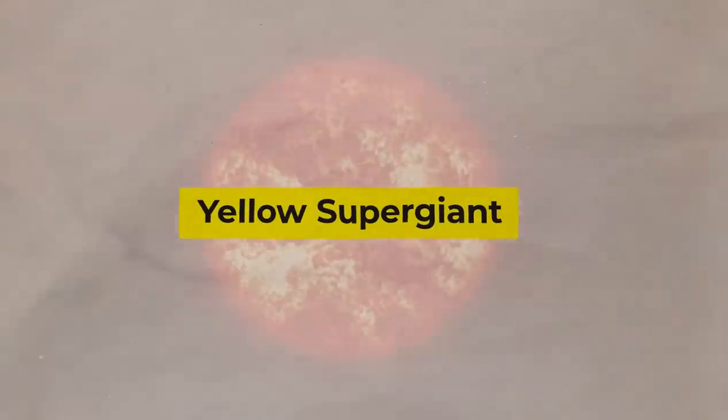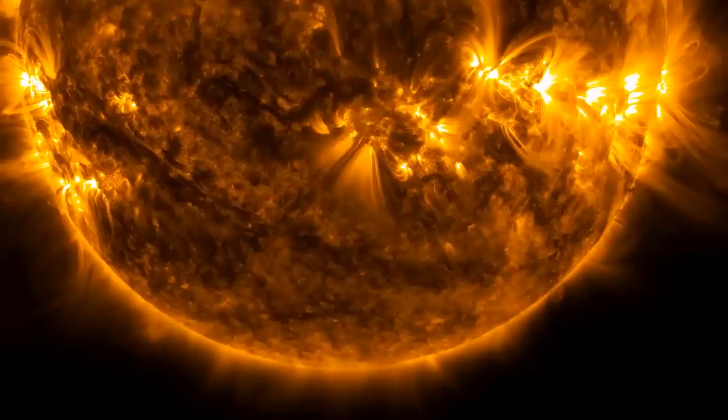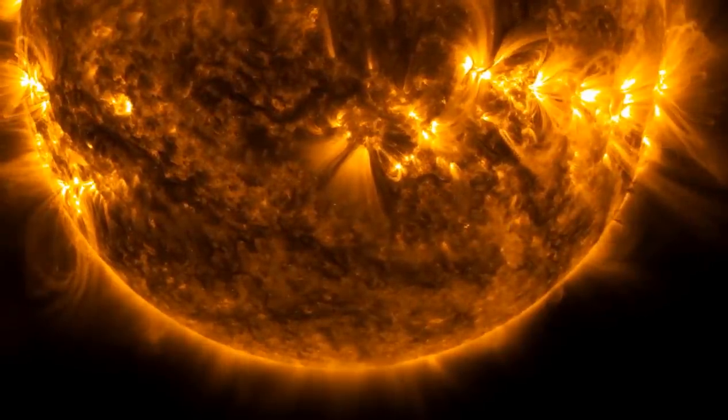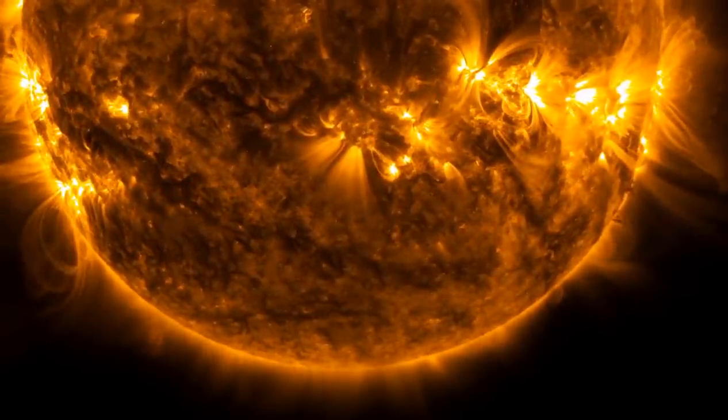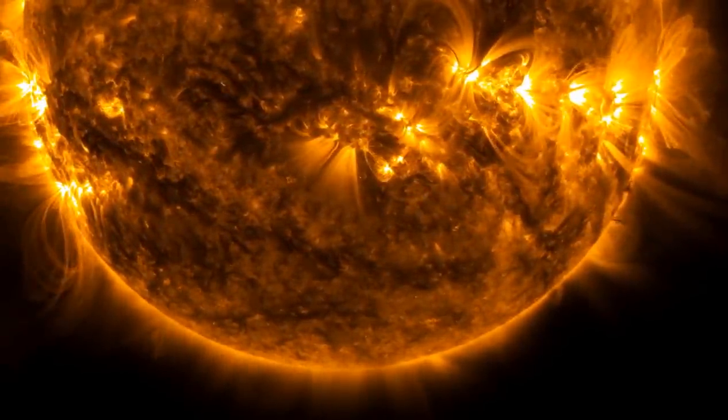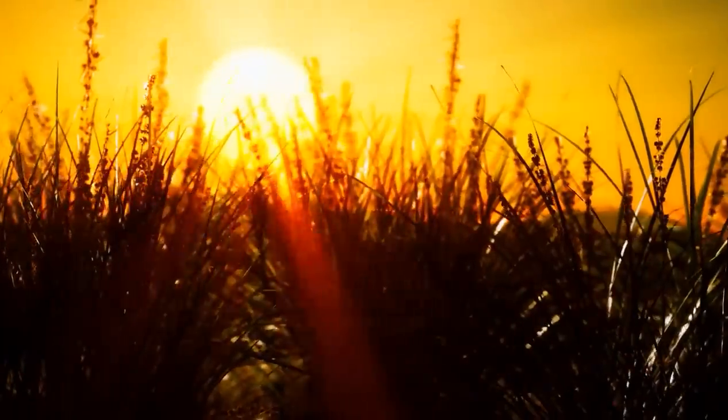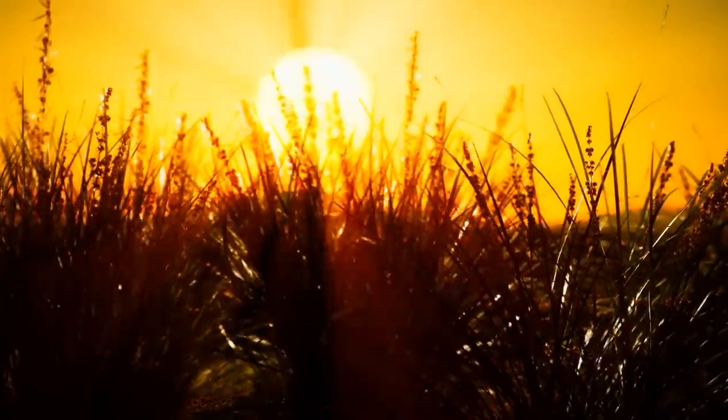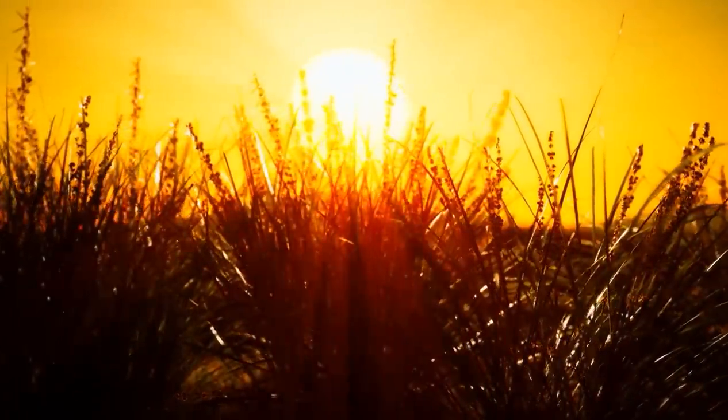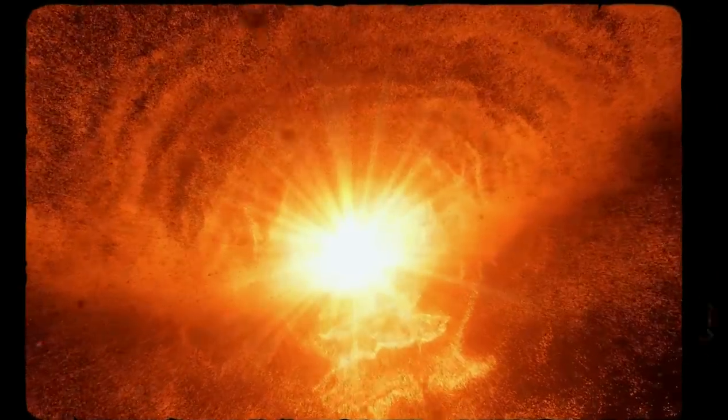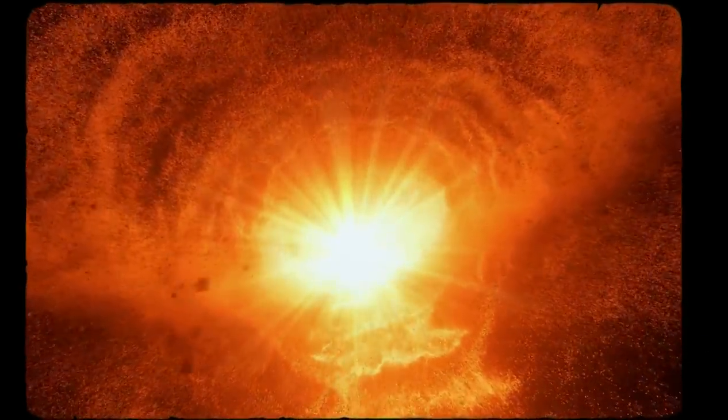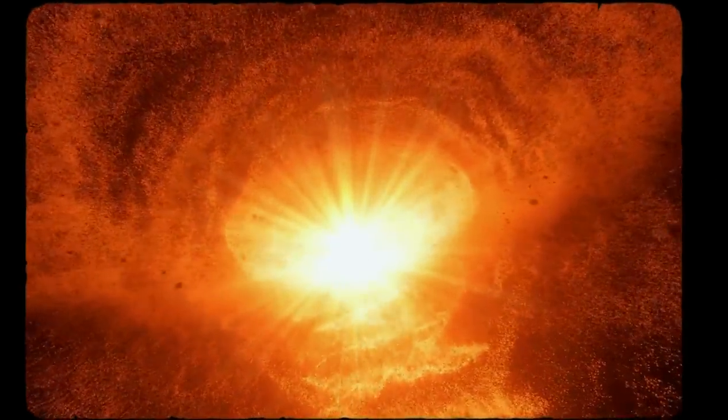Larger stars frequently burn through their hydrogen faster and die off sooner. Despite being only roughly 10 million years old, Betelgeuse is certainly nearing the end of its lifespan. Our sun, on the other hand, is still in its prime at approximately 5 billion years old. Furthermore, because Betelgeuse is nearing the end of its life, a supernova may occur soon.